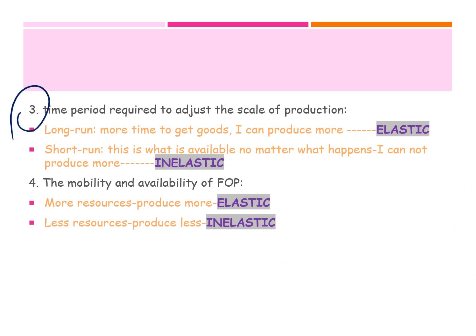The third factor is the time period required to adjust the scale of production. In the long run — more than a year — you have more time to get goods, so you can produce more, meaning the supply would be elastic. In the short run, what is available is fixed and you cannot produce more, meaning the supply would be inelastic.